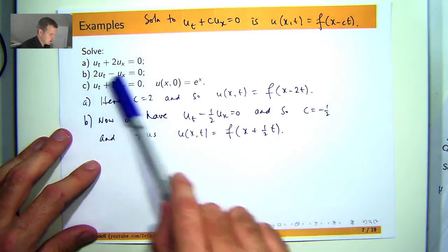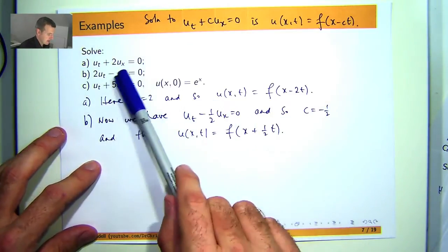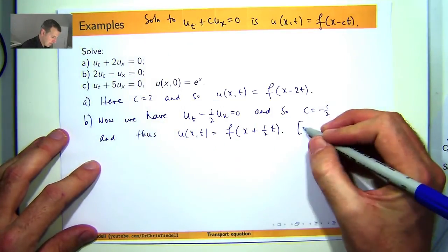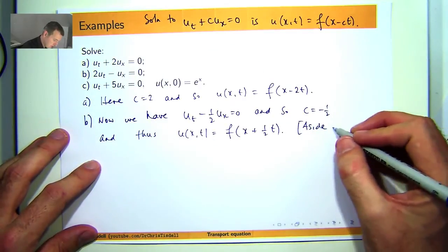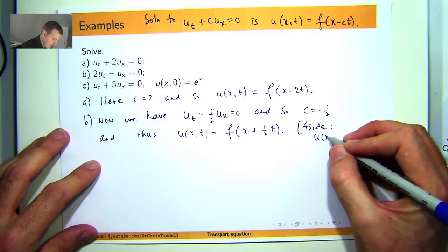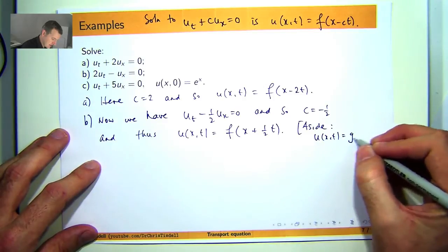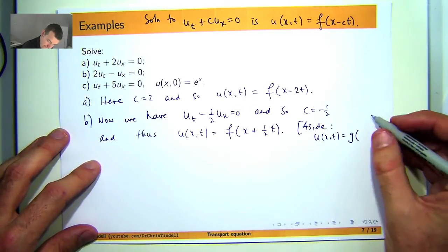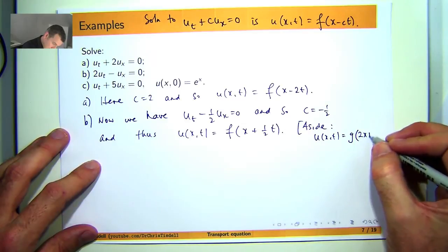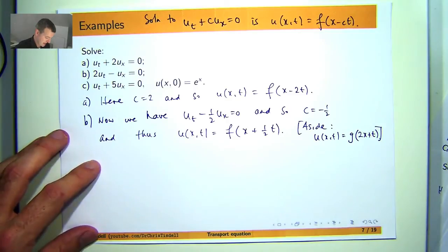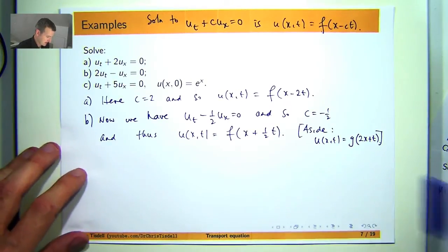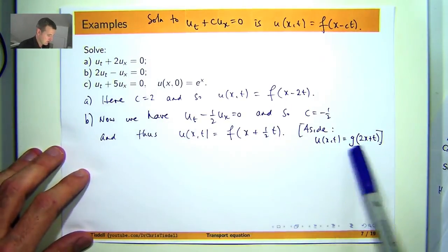Now strictly speaking you don't really need to move that 2 down. You can easily check that another solution is just this. Where g again is an arbitrary but differentiable function. So if you don't want to switch it around you can go with this.